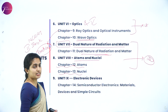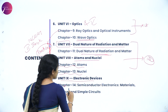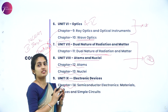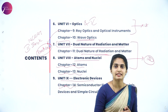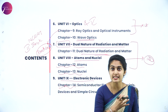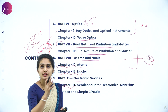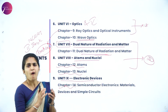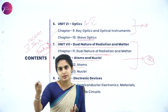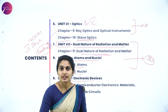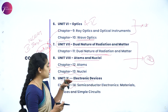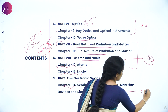Finally, unit nine is Electronic Devices, consisting of Chapter 14: Semiconductor Electronics. We study materials, devices, and simple circuits — how a diode behaves, how a Zener diode behaves, what is biasing, forward bias and reverse bias, and digital technologies including logic gates such as NAND gates and AND gates. This chapter is allotted 7 marks.